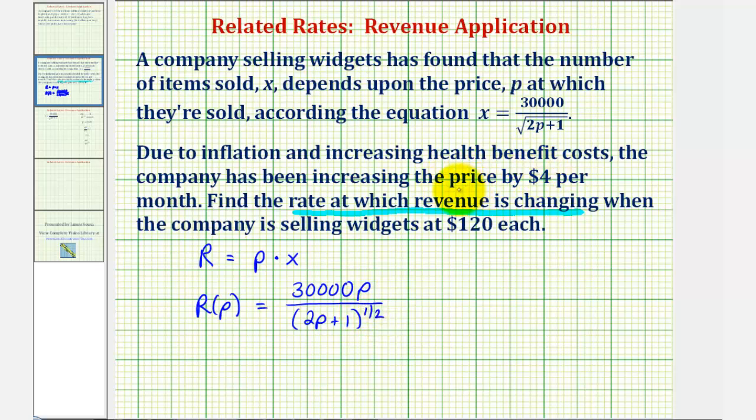We're also told the price is increasing by $4 per month, which means dp dt, the change in p with respect to t, is equal to $4 per month. And the current selling price is $120, so we also know p equals 120.